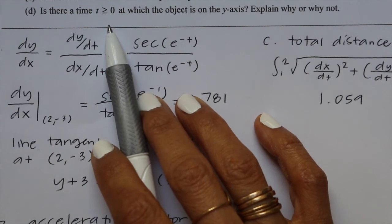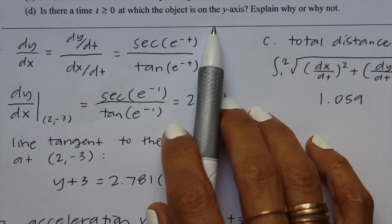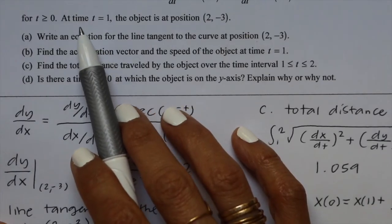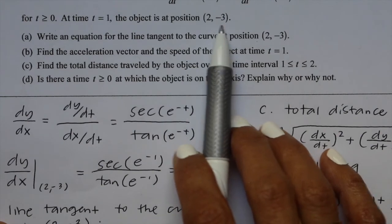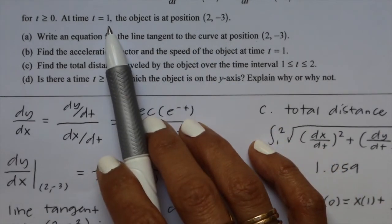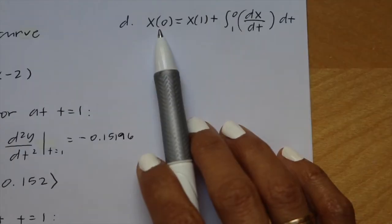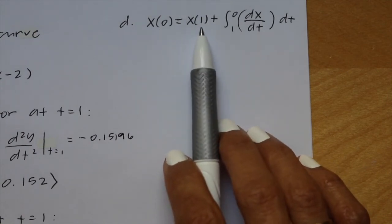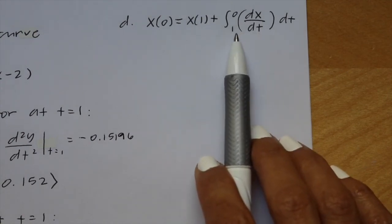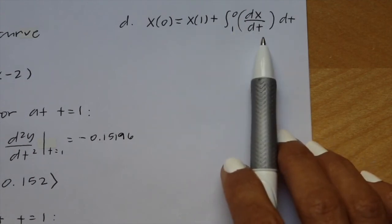Part D: Is there a time t ≥ 0 at which the object is on the y-axis? Since at t equals 1 the object is at x equals 2, we need to check where the object is at t equals 0. We integrate dx/dt from 1 to 0, starting from the known x-position at t equals 1, which is 2.